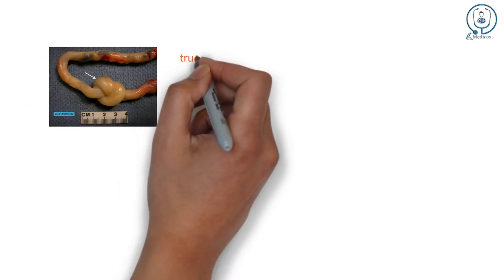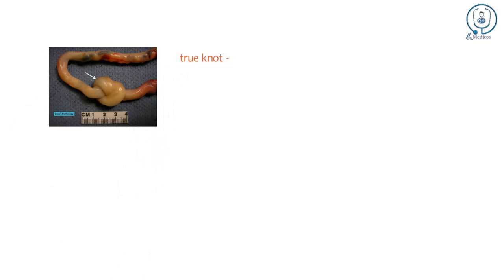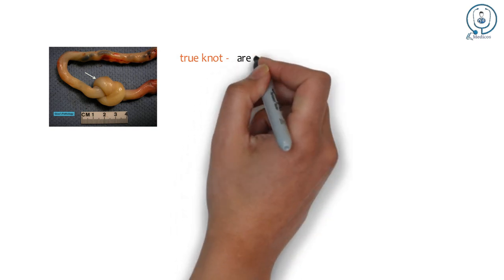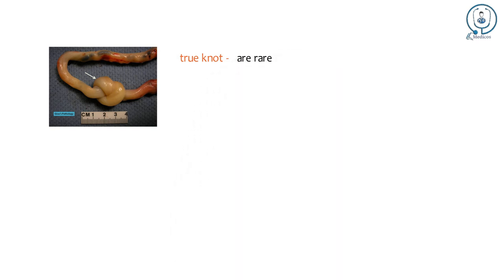Now look at this image. As you can see, there is a knot in the umbilical cord. This is true knot. True knots are rare. Even with true knot, the fetal vessels are protected from compression by the Wharton's jelly.